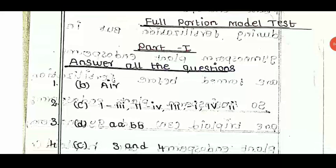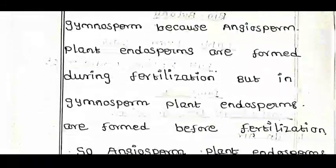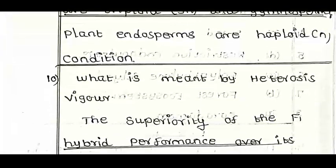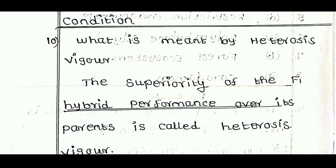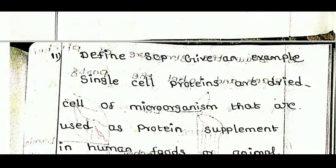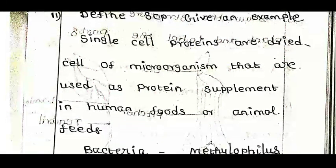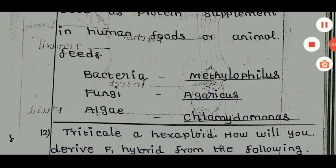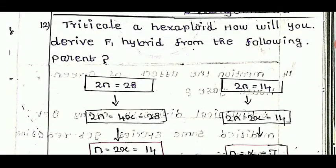So this is the key answer for the full portion model test for public exam. If you download it, you can use it. Angiosperm endosperm is triploid (3n) and gymnosperm endosperm is haploid. The superiority of F1 hybrid performance over the parent is called heterosis. Single-cell proteins are dried cells of microorganisms used in protein supplements, human foods, or animal foods — bacteria, Methylophilus, fungi, Agaricus, Spirulina, Chlamydomonas.